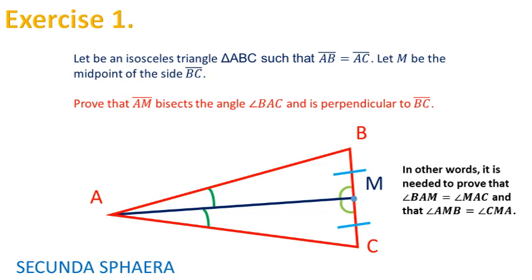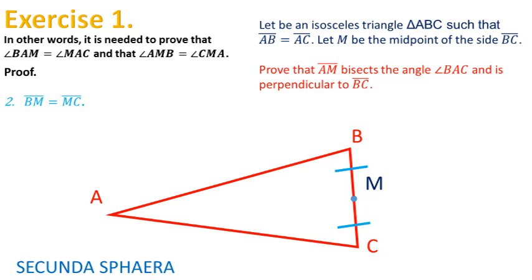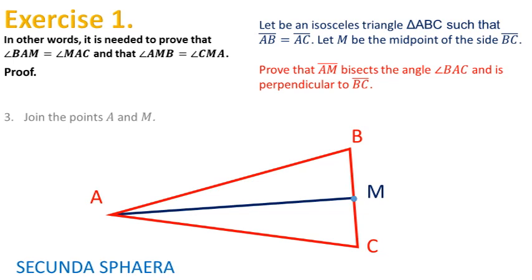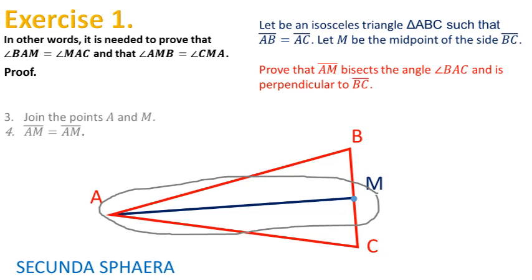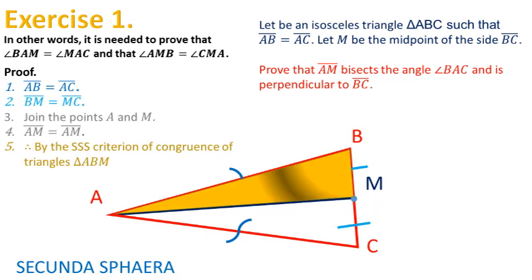There is a drawing showing the information given by the statement of the problem and the information required to infer. To start, the details on the information that needs to be inferred will be set aside. It is important to recall and keep track of the details already present: the sides AB and AC are equal, and the point M is the midpoint of side BC, so the segments BM and MC are equal. To continue with the solution, the segment AM will be constructed. After drawing the segment AM, it is true that it is equal to itself. This may be a tricky step. Reviewing the information gathered, it is known that AB and AC are equal, BM and MC are equal, and AM is equal to itself. Then, by the SSS criterion of congruence of triangles, the triangles ABM and ACM are congruent.